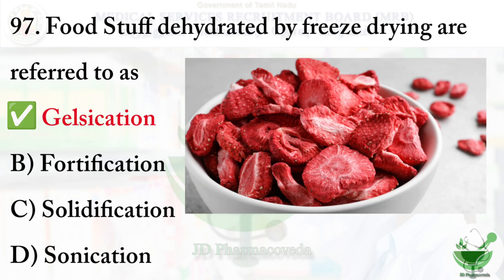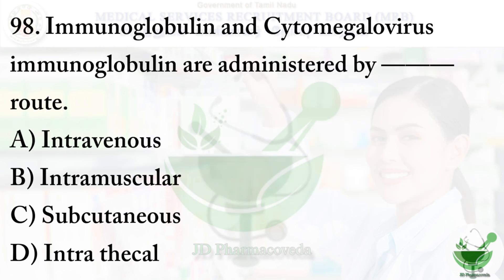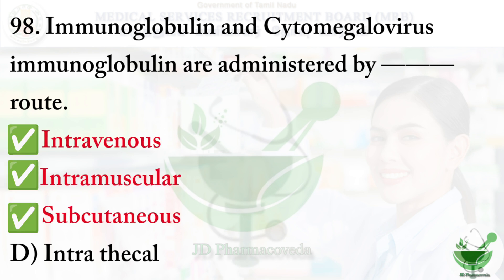Question number 98: immunoglobulin and cytomegalovirus immunoglobulin are administered by which route? Options: option A — intravenous, option B — intramuscular, option C — subcutaneous, option D — intrathecal. The right option is option A, B, C: intravenous, intramuscular, and subcutaneous. If the question specifically asks for cytomegalovirus immunoglobulin, the answer is option A — intravenous only.